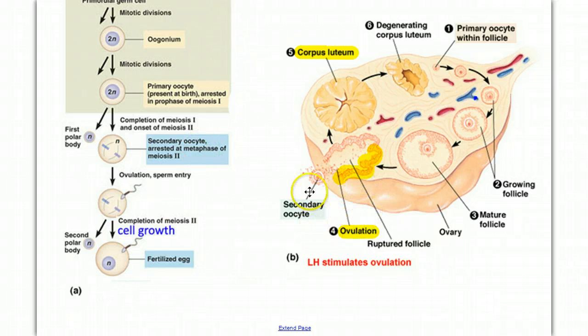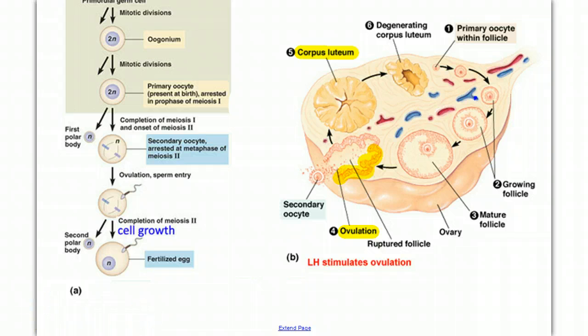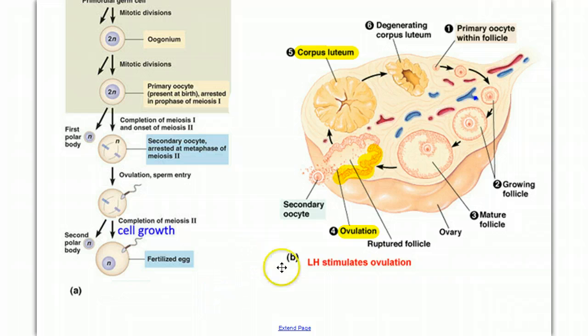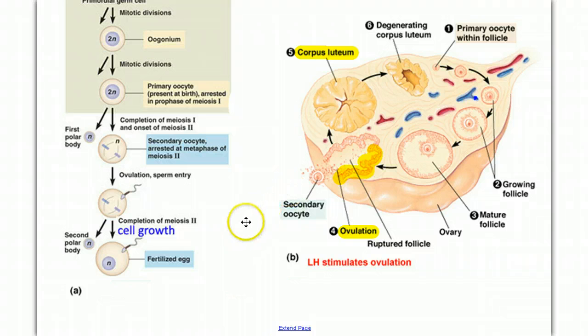At the same time that the ovarian cycle is occurring and we release an egg, there's another cycle called the uterine cycle, which is a sequence of building up and breaking down of the endometrium — the uterine wall. We need the ovarian cycle and the uterine cycle to be in concert, to be coordinated, so that when the oocyte is released, the endometrium is prepared for a possible pregnancy.